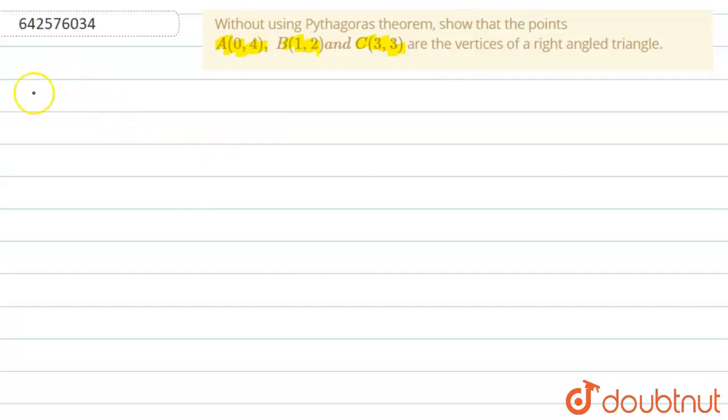We know that for a right-angled triangle, any one angle is 90 degrees. That means two sides are perpendicular to each other.